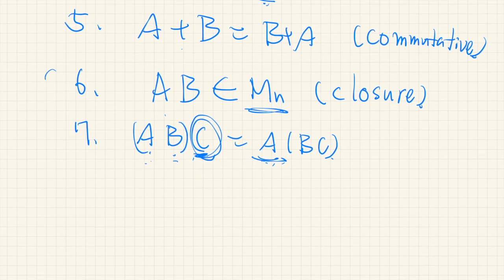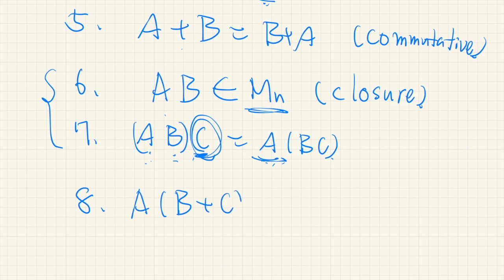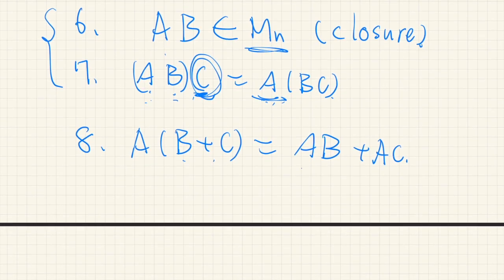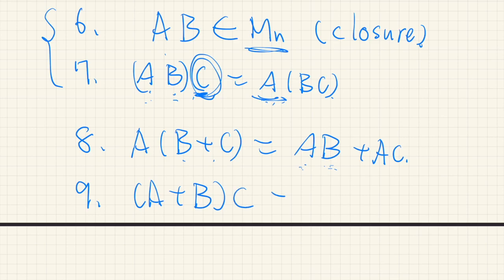Properties 8 and 9 combine addition and multiplication — the distributive laws. Property 8: A times (B plus C) equals AB plus AC. We cannot switch AB to BA because the order matters. Property 9: another distributive law — (A plus B) times C from the right equals AC plus BC.